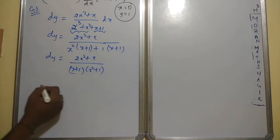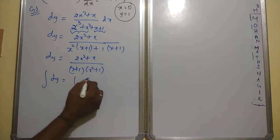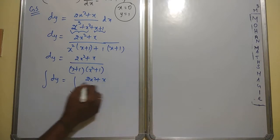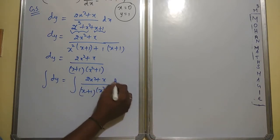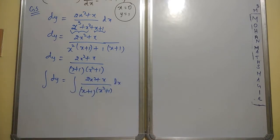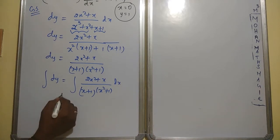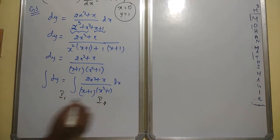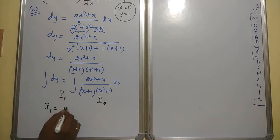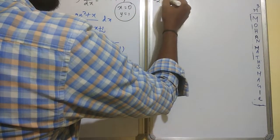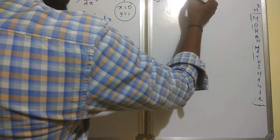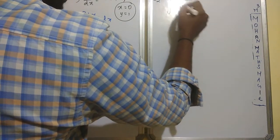Now integrate both sides. We separate this into I1 and I2. Doing them separately makes it easier for the exam evaluator to award marks. I1 is the simpler integral on the left and I2 contains the more involved expression 2x² + x over (x+1)(x²+1).